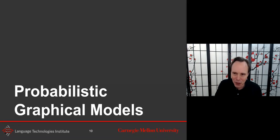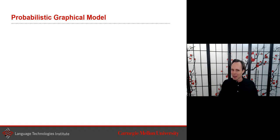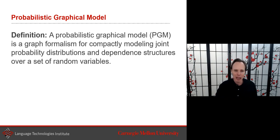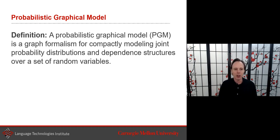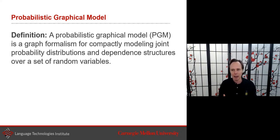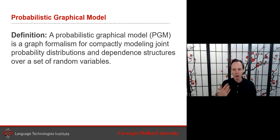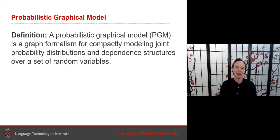A probabilistic graphical model is a graph representation — a formalism for representing both mathematically and visually a compact modeling of the joint probability distribution. The same graphical model gives you this compact modeling and also reveals the dependence structure between variables.